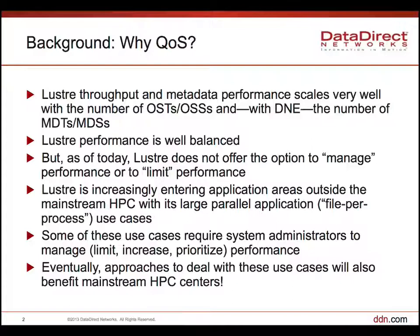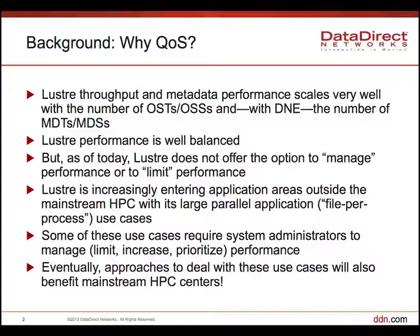Some background here. Why QoS? As you know, the throughput and metadata performance of Lustre scales very well today — scaling by number of OSTs and OSSes. We also have the cluster metadata option, DNE for MDT, so metadata performance scales by number of MDTs and MDS layers. The Lustre performance is very balanced. But today, it is very hard to control or make a limit of Lustre performance.